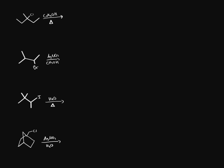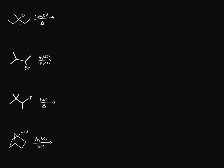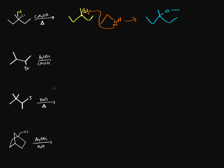Now for SN1 reactions — there are different scenarios for how they work. The first is a simple one: we have ethanol and a tertiary chlorine. With heat, chlorine leaves and you get a carbocation on that carbon. No rearrangements are possible here. Ethanol attacks the carbocation, and then another ethanol molecule abstracts the hydrogen on the oxygen, giving a final ether-type product.